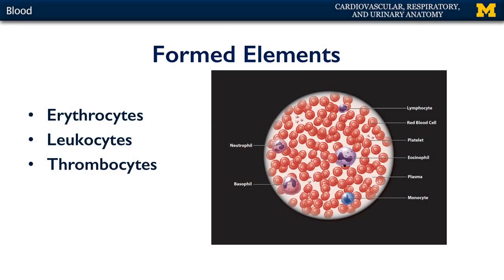Here we can see a typical field of view of a histologist who is looking at a blood slide. Within this field of view, we can see all of the major formed elements of the blood. We can see the erythrocytes, which look like biconcave discs. We can see the leukocytes in their various appearances, and we can also see thrombocytes floating around in the solution as well.